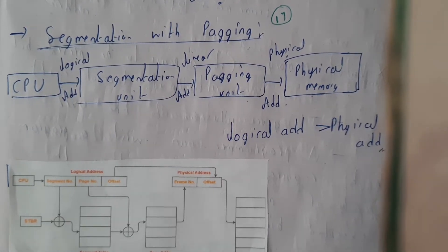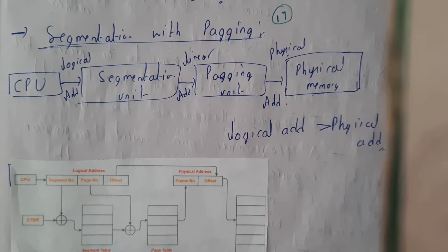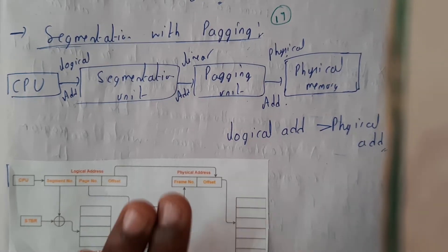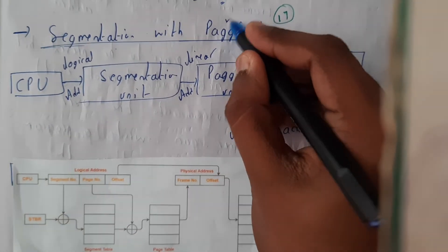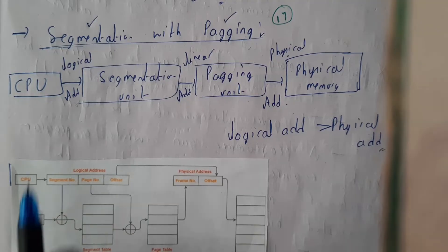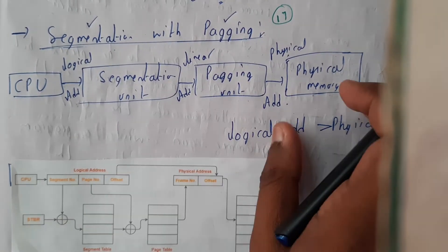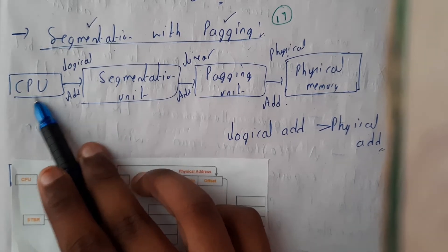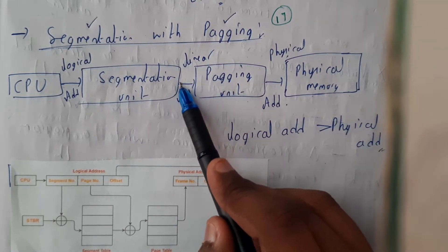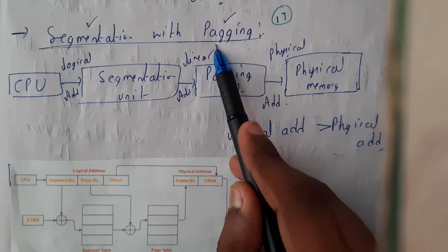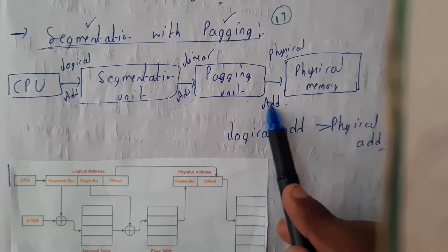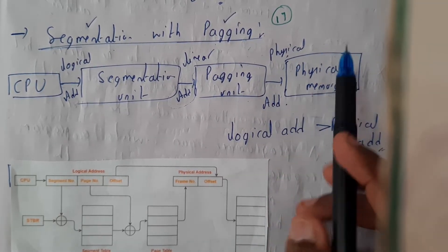Hello guys, we are back with our next tutorial. In this tutorial, let us go through the concept of segmentation with paging. Till now we have learned about paging and segmentation individually, so what if they are both combined? Basically, the CPU will be generating the logical address. That logical address is passed through the segmentation unit, which generates a linear address, and this linear address is given as input to the paging unit, which then generates the physical address residing in main memory.